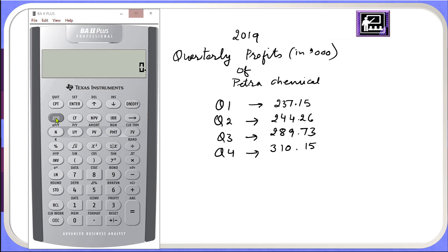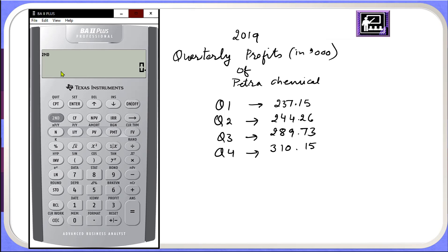To access memory location I have to click second. Make sure you are in the second function and then we will click on MEM memory. Now here you see M0 is 237.15, so which is this number.